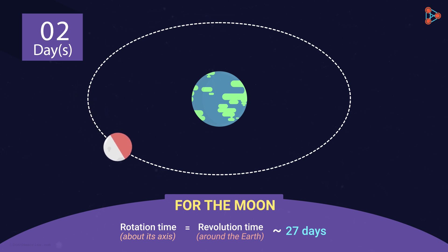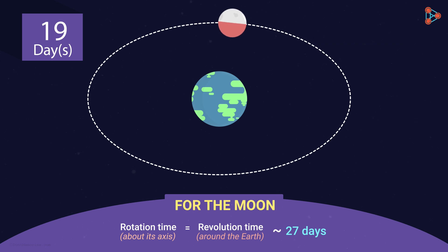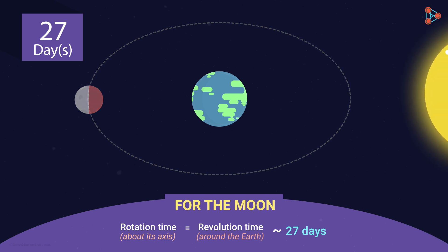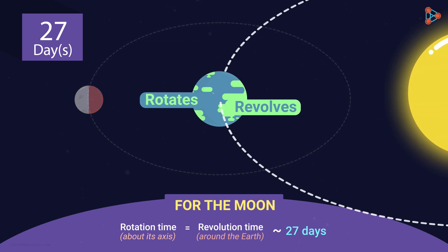Let's have a look at this one more time. Notice how the moon is moving — we can see that at any point in time, just one side of the moon is visible to us from earth. In reality, the earth is rotating as well as revolving around the sun. But irrespective of that, from any point on the earth, only one side of the moon can be seen.